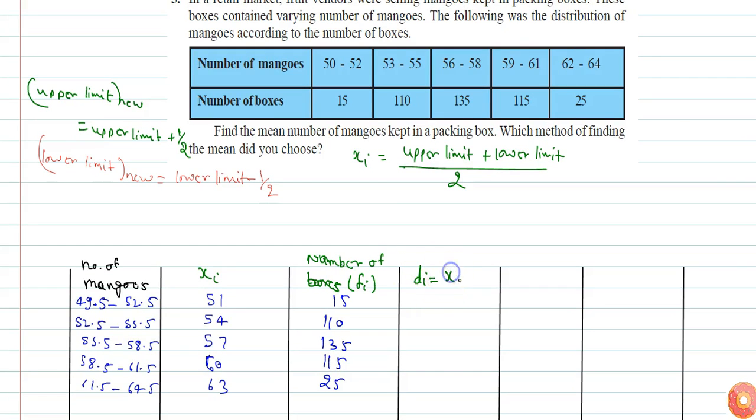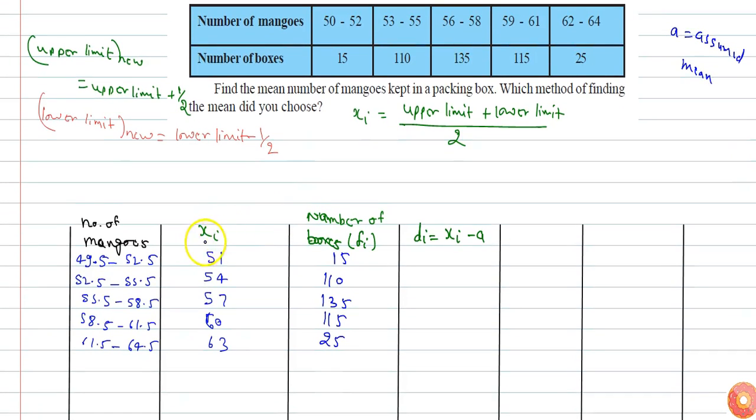Which is xi minus a. Di is the deviation of each xi, where a is the assumed mean. Assumed mean can be chosen from the xi, and here I am choosing the value 57. You can choose among all values of xi. So if I choose as assumed mean 57, then the deviation from the assumed mean for each xi will be: